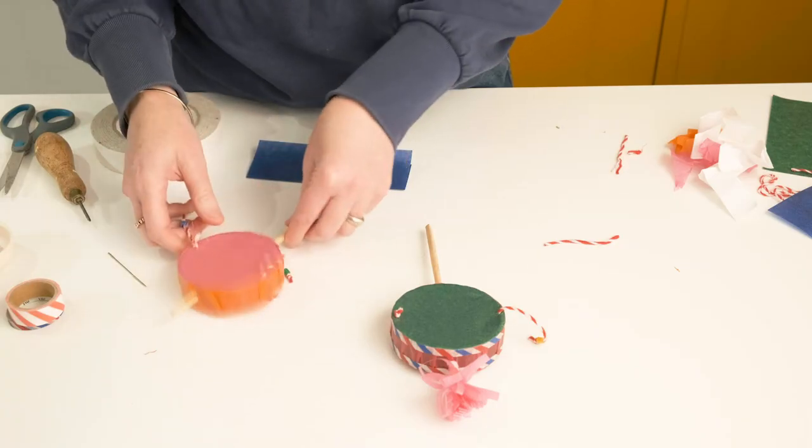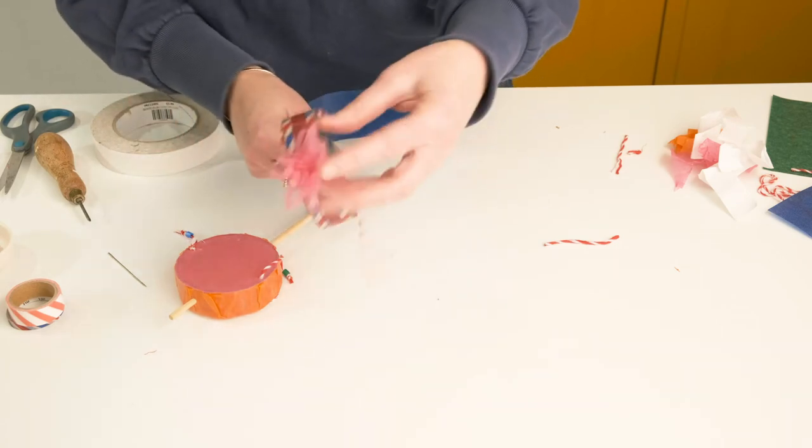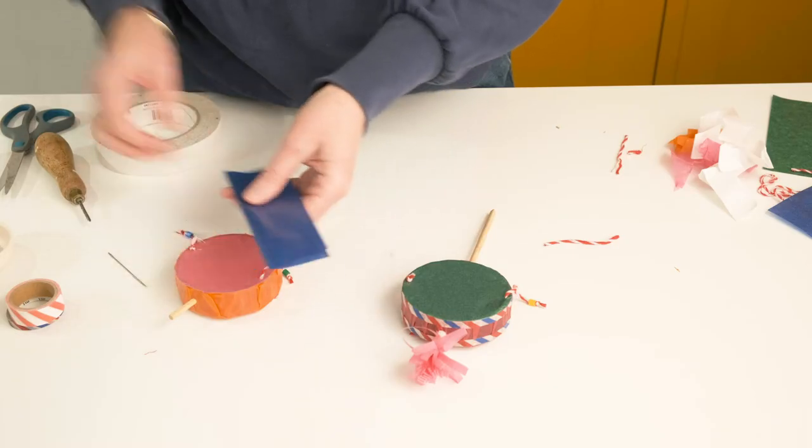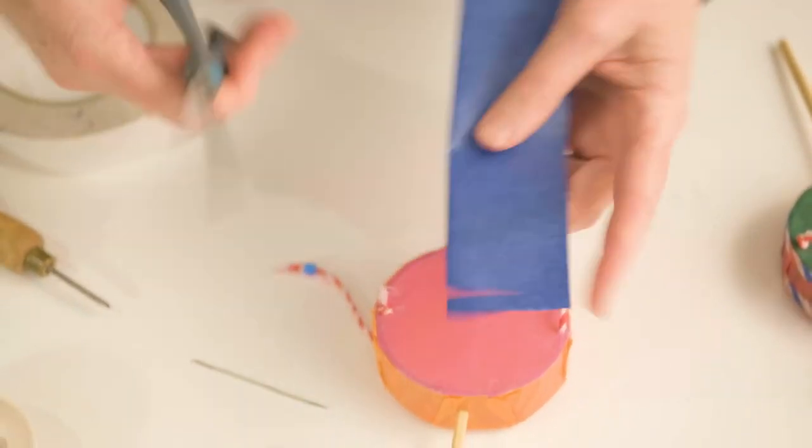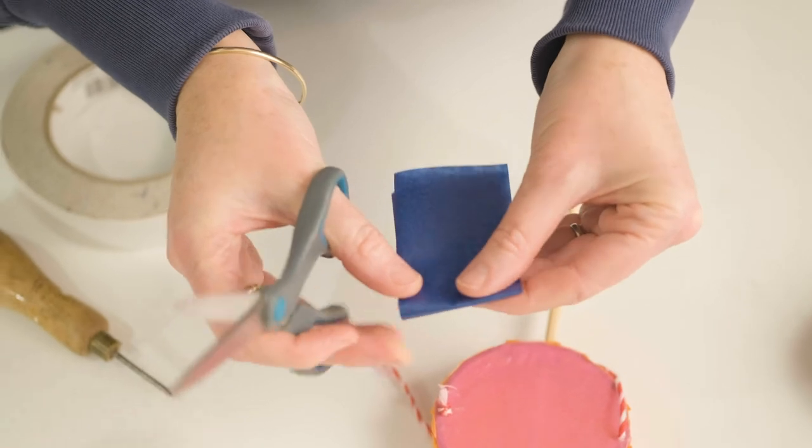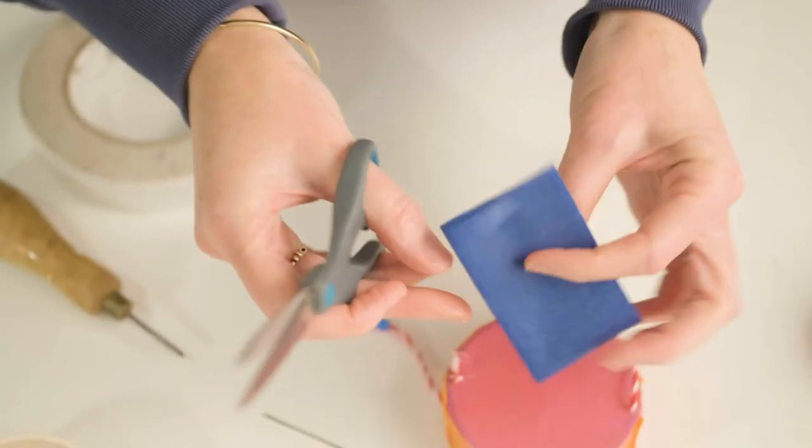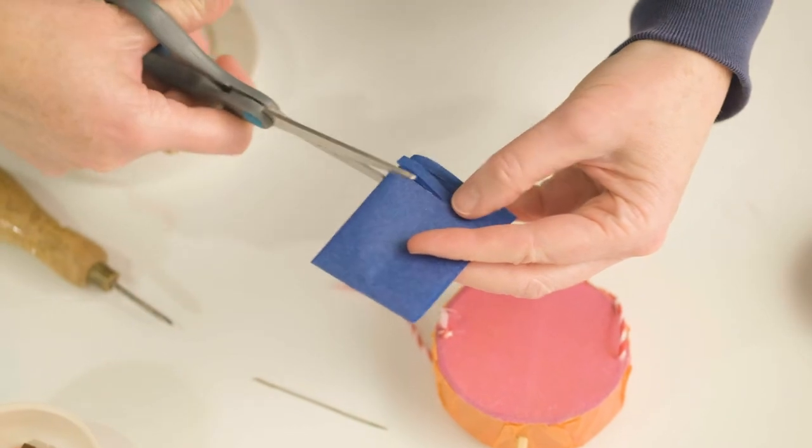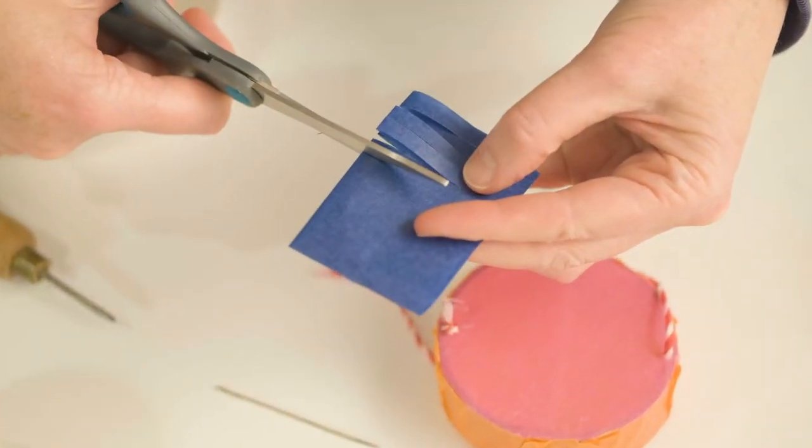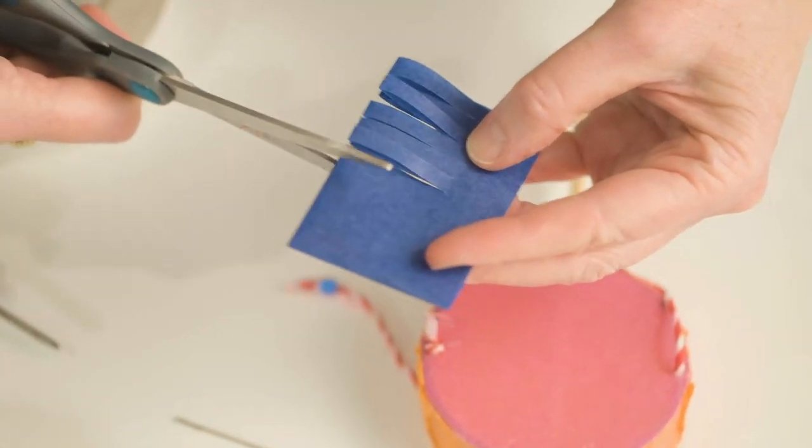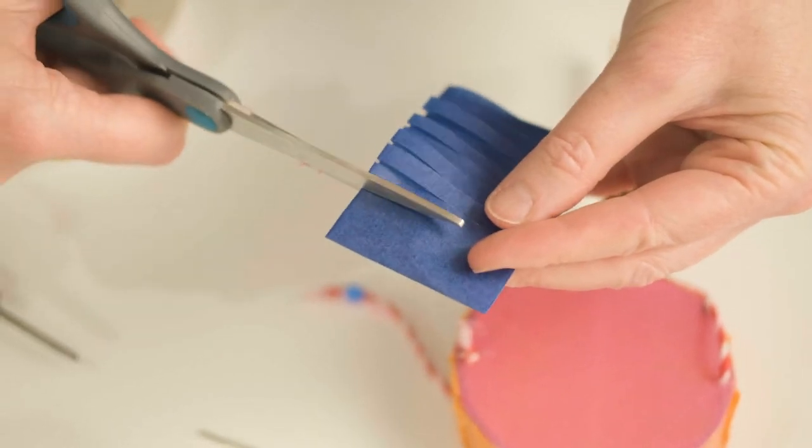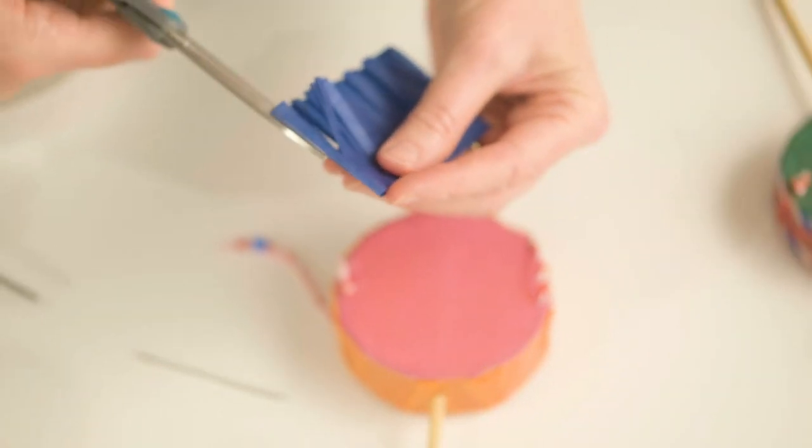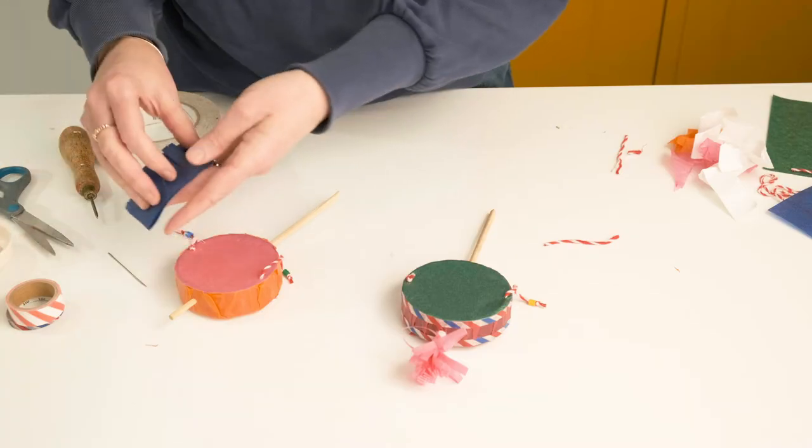But now we just want to add the frills. So this is a little tassel on the top. So what I'm going to do is I've got a piece of paper here that I've folded in half. And I'm just going to snip. In fact, you can fold it in half again. Save time. So I'm snipping along the folded edge. Probably doing this about five millimeters apart. And I'm just going to cut down that fold there too. Just halfway.